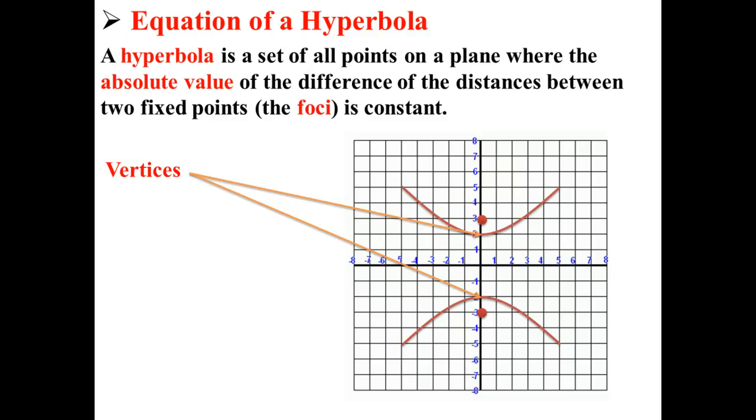This hyperbola has two vertices, one at the point (0, 2) and one at the point (0, -2). This hyperbola also has a center at the point (0, 0).